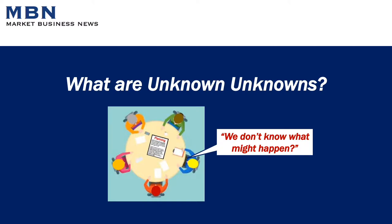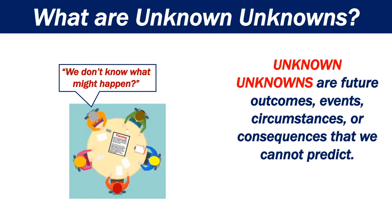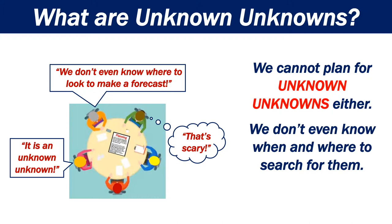What are unknown unknowns? Unknown unknowns are future outcomes, events, circumstances, or consequences that we cannot predict. We cannot plan for unknown unknowns either. We don't even know when and where to search for them.